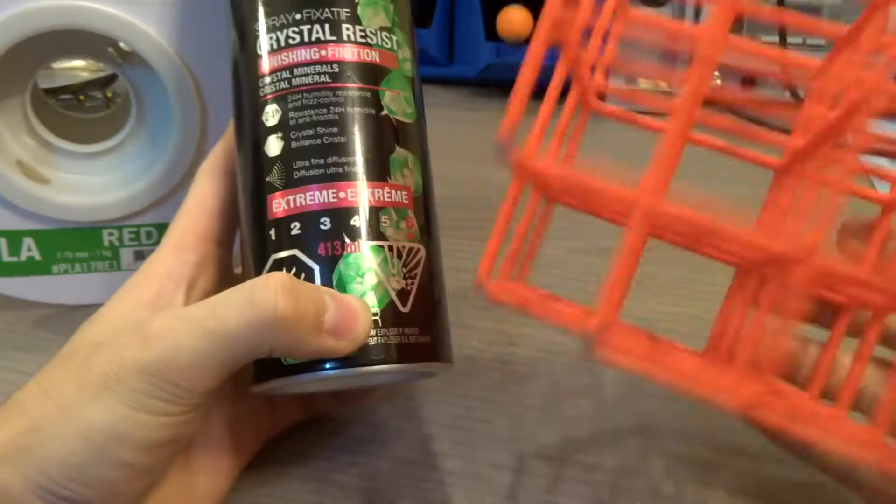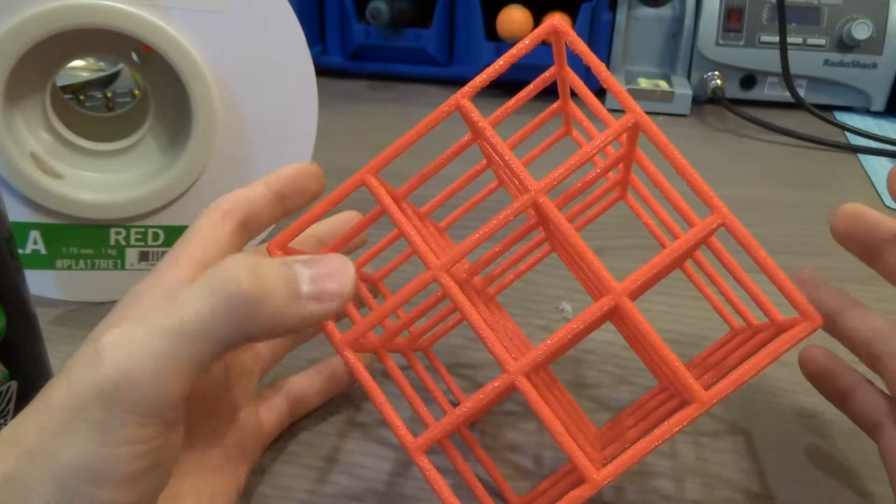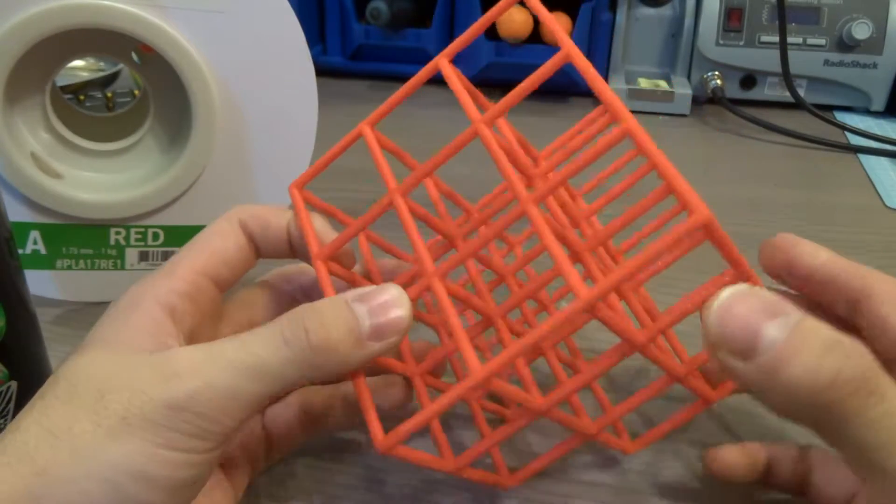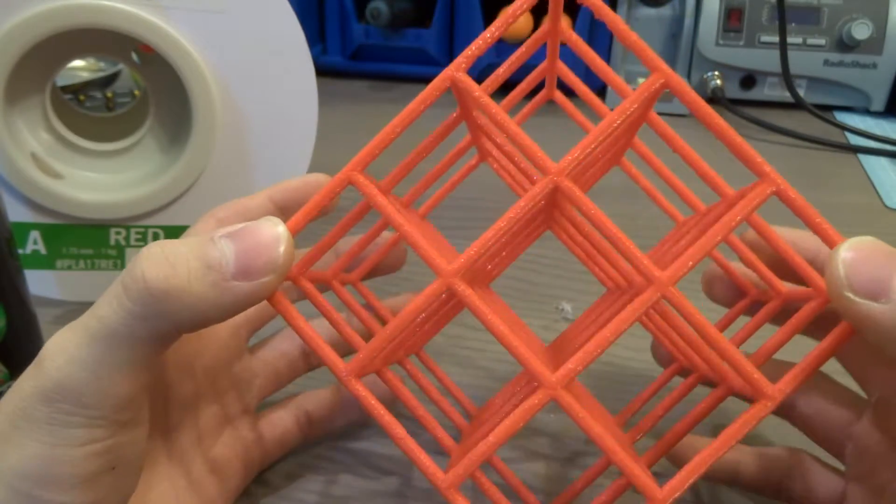Tip number three is adjusting your printer. So things like adjusting your belts, make sure the bed is level, make sure there's no clog in the hot end. I can't stress enough how many times I've cleaned my hot end before I did this print.